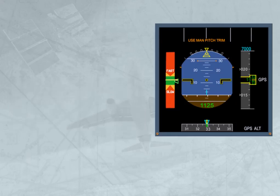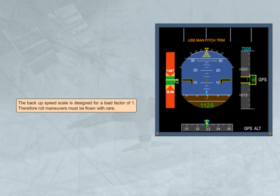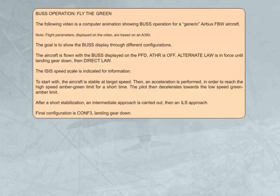The aircraft's angle of attack speed must remain in the green area. For each configuration, a green bug indicates the target speed, which is the optimum speed the flight crew must maintain, especially during approach and landing. The target speed is automatically set by the system. The aircraft's current speed is indicated by a fixed yellow horizontal bar with a yellow triangle. The backup speed scale is designed for a load factor of 1; therefore, roll maneuvers must be flown with care. BUS operation: fly the green. The following video is a computer animation showing BUS operation for a generic Airbus fly-by-wire aircraft.